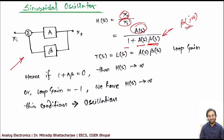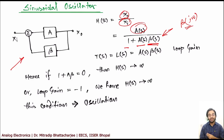Previously in amplifiers we wanted β to be constant, but now we are putting inductors and capacitors in the feedback network, which makes it frequency dependent.